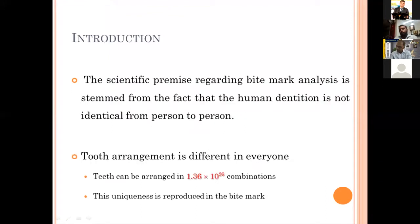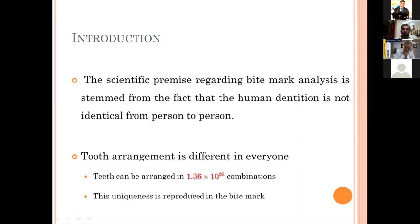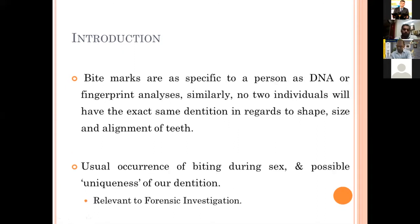The scientific premise regarding bite mark analysis is stemmed from the fact that human dentition is not identical from person to person, because the tooth arrangement is unique to each individual based on tooth arrangement — either intact teeth, decayed teeth, replaced teeth, or prosthesis. Based on these permutations and combinations, the teeth can be arranged into 1.36 × 10²⁶ combinations. This uniqueness is reproduced in the bite mark, so bite marks are as specific to a person as DNA or fingerprint analysis.